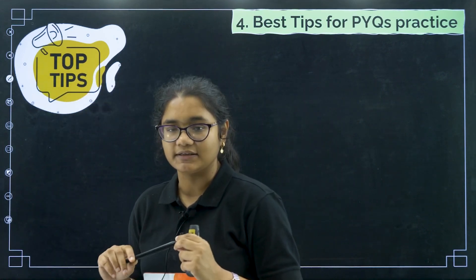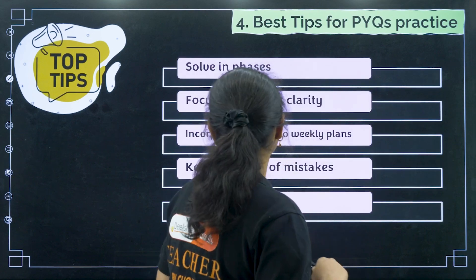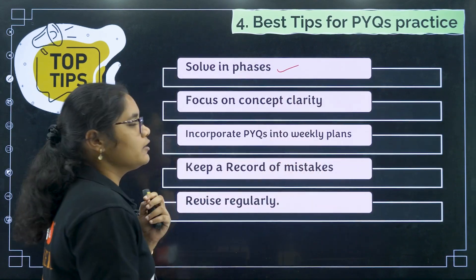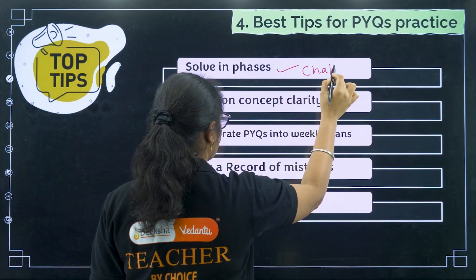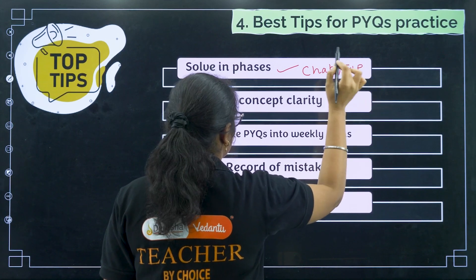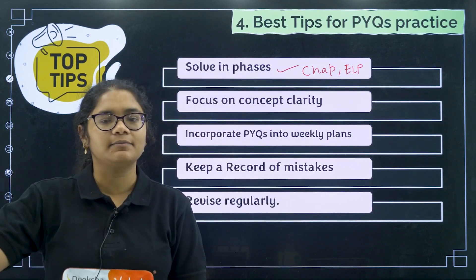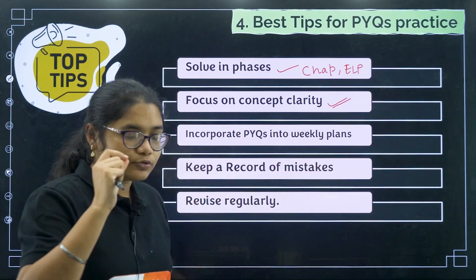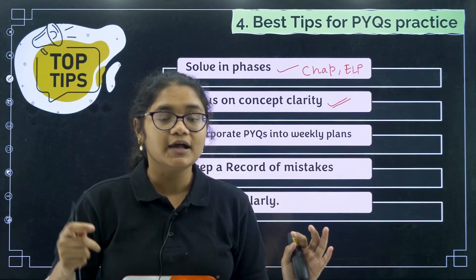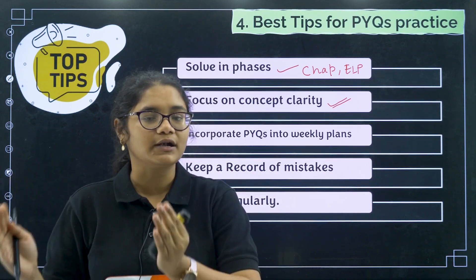Now here are the best tips you should follow while solving previous year questions. The first tip is to solve in phases: first go for chapter-wise PYQs, then go for full-length papers. Once one chapter is done, solve its PYQs; once the second chapter is done, solve its PYQs. The second tip is to focus on concept clarity. For questions you get wrong, do not try to mug up the solutions — try to understand and clear the concept properly.